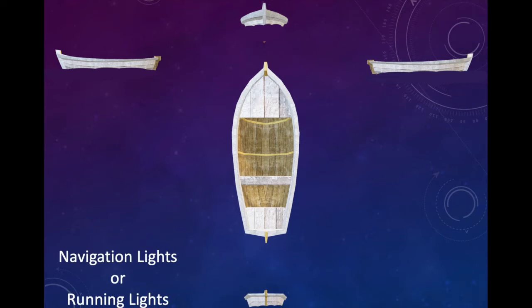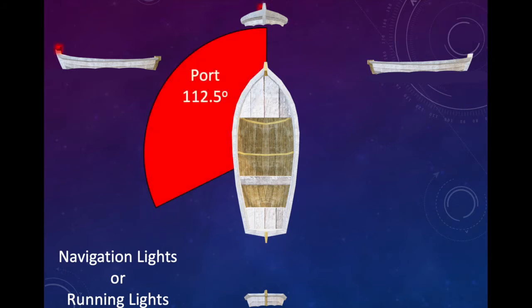The first lights we're going to look at are the navigation lights or running lights. These are going to be the red and greens up front. So on the port side, we've got our red light coming in at 112 and a half degrees. Notice that it goes past the middle marker. In fact, it goes about 22 and a half degrees abaft the beam.